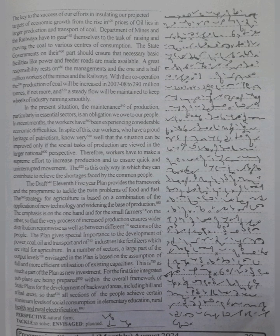The state governments on their part should ensure that necessary basic facilities like power and feeder roads are made available. A great responsibility rests on the management and the one and a half million workers of the mines and railways. With their cooperation, the production of coal will be increased in 2007-8 to 290 million tons if not more, and a steady flow will be maintained.